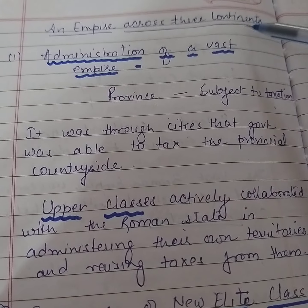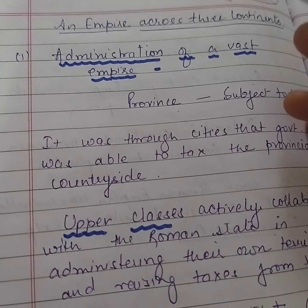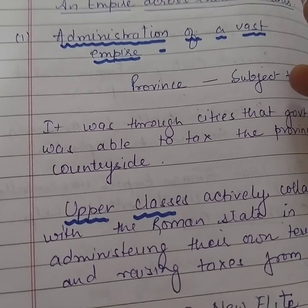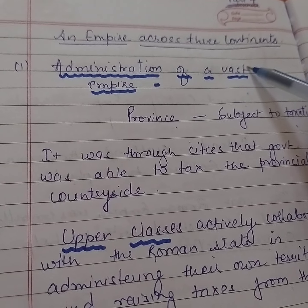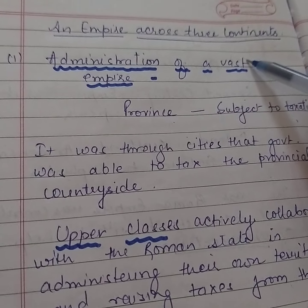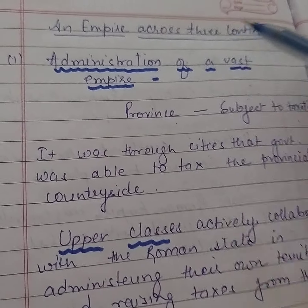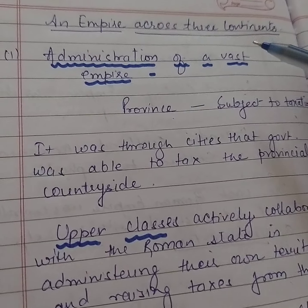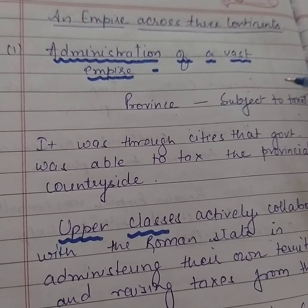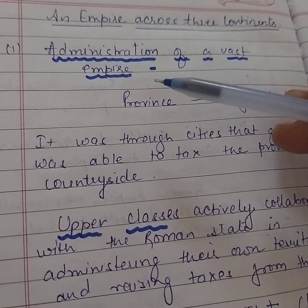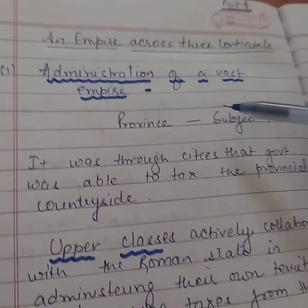We were doing the chapter on an empire across three continents. The Roman Empire was a vast empire spread over three continents. How was it possible for the emperor to cope with the control and administration of such a vast and diverse set of territories, with a population of some 6 crore in the mid 2nd century? The answer lies within the urbanization of the empire. Today the topic is: administration of a vast empire.